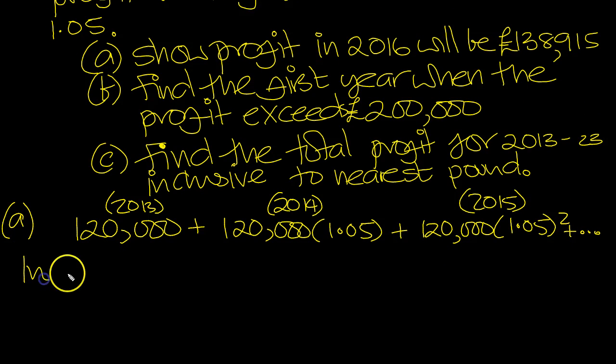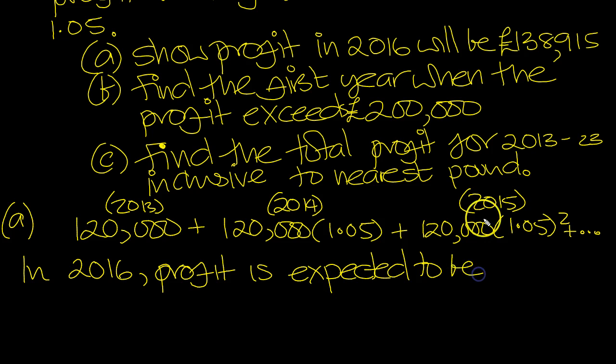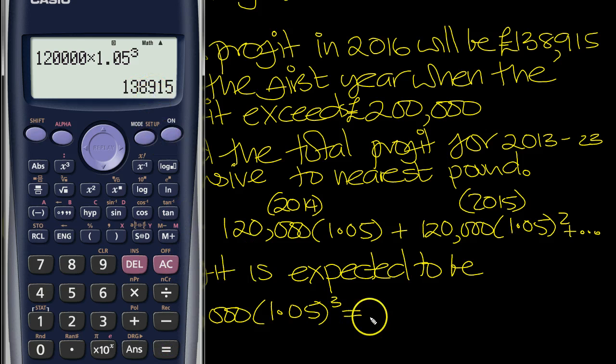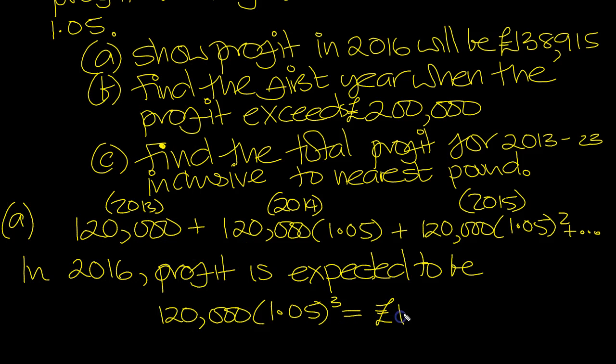So 2016... So the profit in 2016 is expected to be... Well, this was 2015, so it's just simply the next term along. So instead of squared it would be cubed. Let's just tap that in then. So 120,000 times 1.05 power 3. 138,915. Which is what we needed to show.